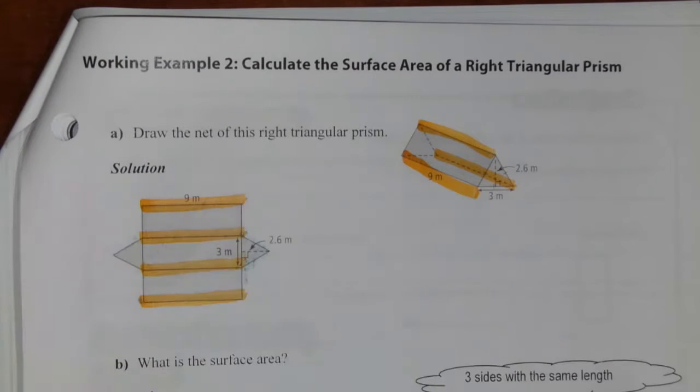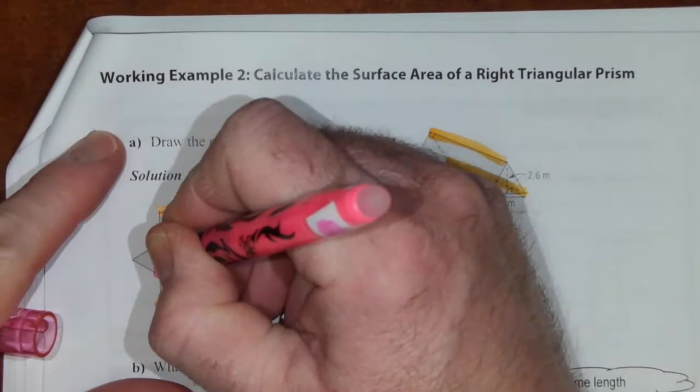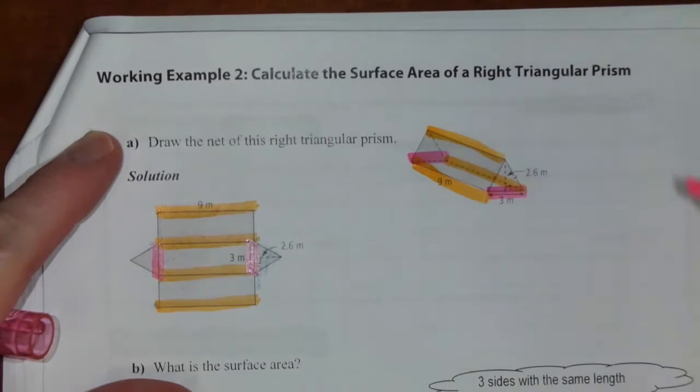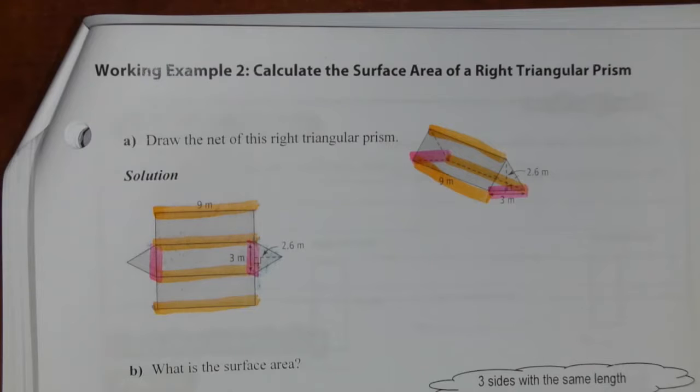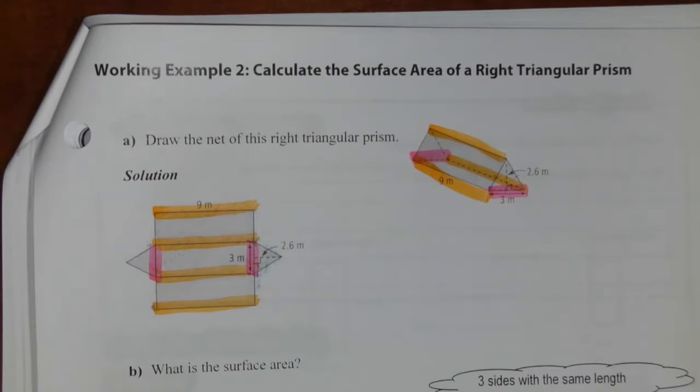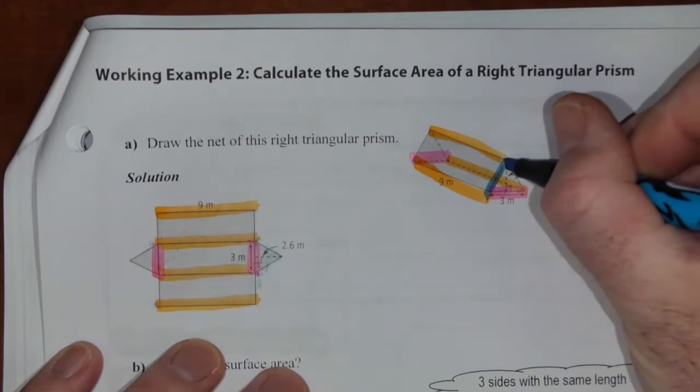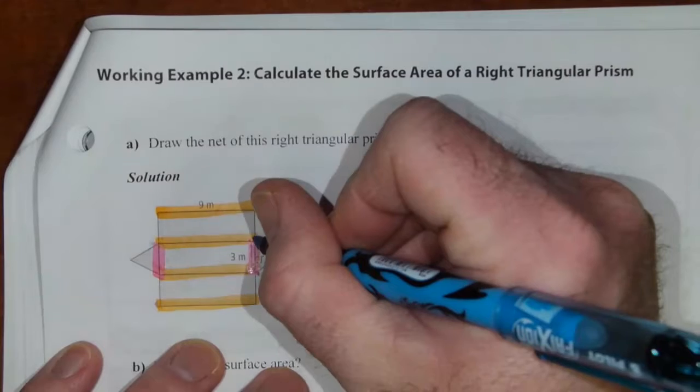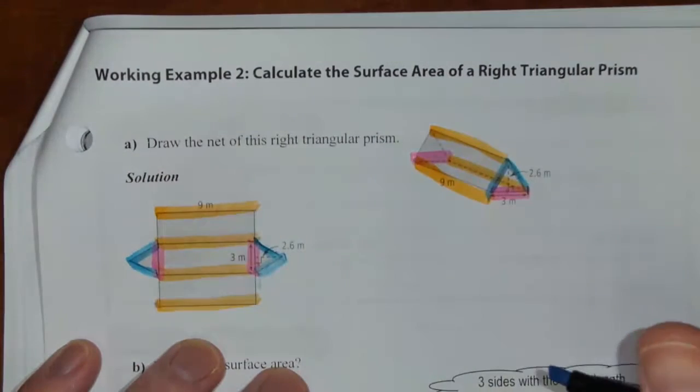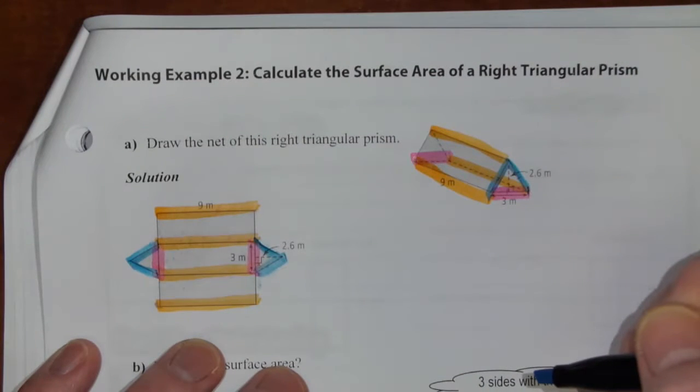Now, we also know that we've got a 3 meter base on here, which is shown here and here. And then we've got the two diagonals of the triangle, which we don't actually have labeled. But then we've got these sides of these top panels as well.